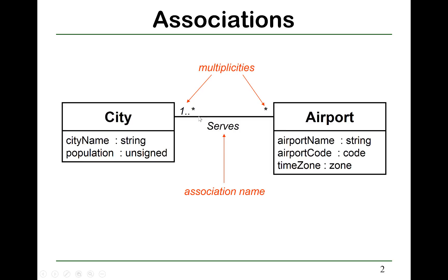At the end of each line, we can indicate the multiplicity. For example, here '1..*' means one or more, and '*' means any number. This multiplicity means that for any airport, there are one or more cities that it serves. And here '*' means zero or more — basically any number — meaning a city is served by zero or more airports.